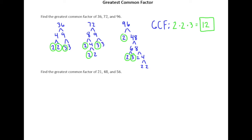Alright, so now let's take a look at this example. We have 21, 48, and 56, so we can prime factor those. We've got 3 and 7 for 21.